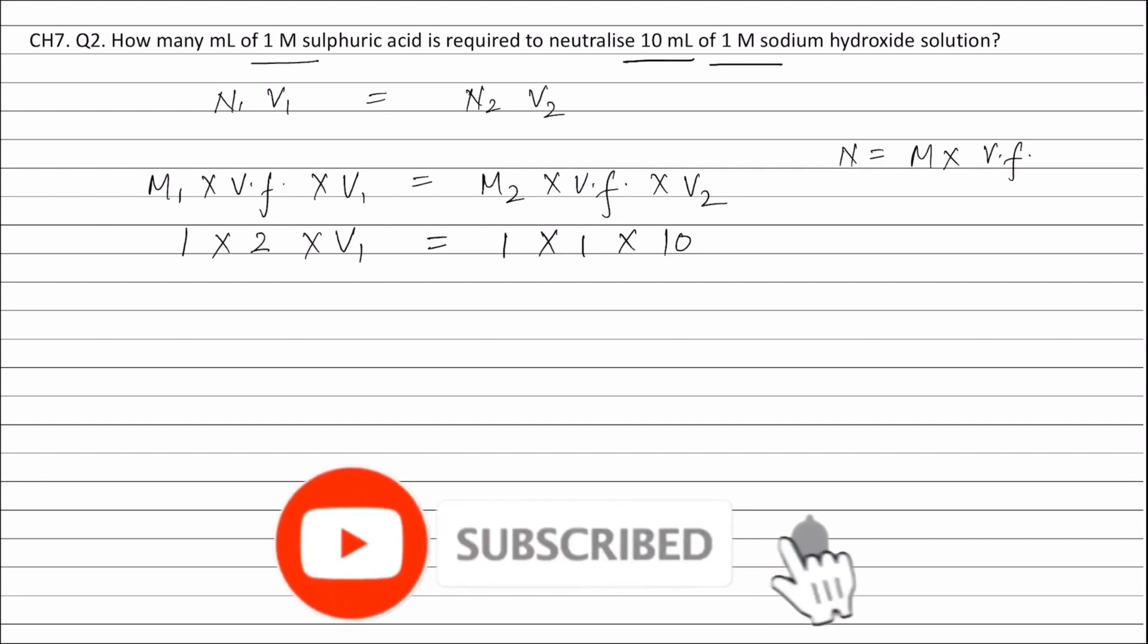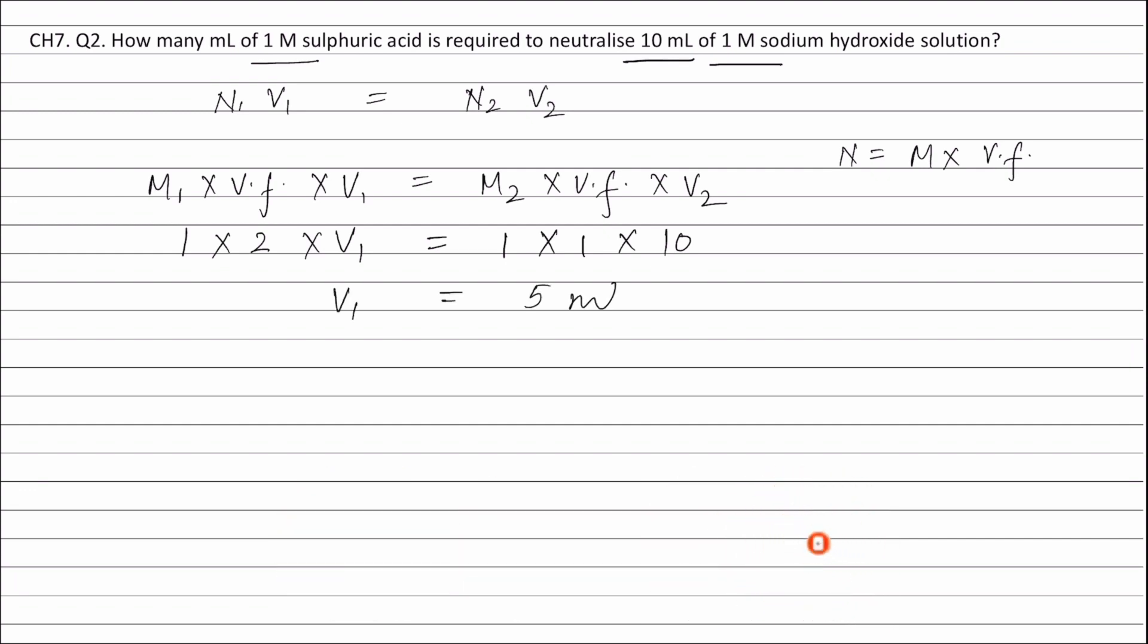Solving this equation, the value for the volume of sulfuric acid is 5 millilitres.